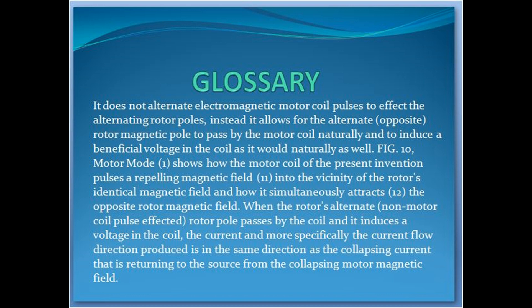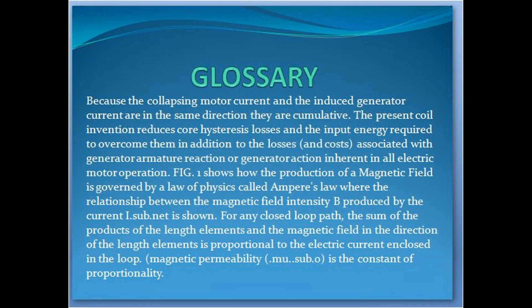FIG. 10, motor mode 1, shows how the motor coil of the present invention pulses a repelling magnetic field (11) into the vicinity of the rotor's identical magnetic field and how it simultaneously attracts (12) the opposite rotor magnetic field. When the rotor's alternate (non-motor-coil-pulse-affected) rotor pole passes by the coil, it induces a voltage in the coil. The current — and more specifically the current flow direction — produced is in the same direction as the collapsing current that is returning to the source from the collapsing motor magnetic field. Because the collapsing motor current and the induced generator current are in the same direction, they are cumulative. The present coil invention reduces core hysteresis losses and the input energy required to overcome them, in addition to the losses associated with generator armature reaction or generator action inherent in all electric motor operation.